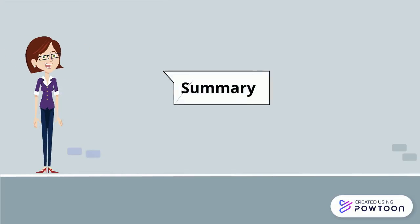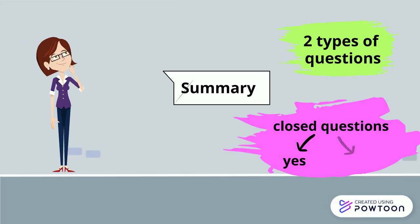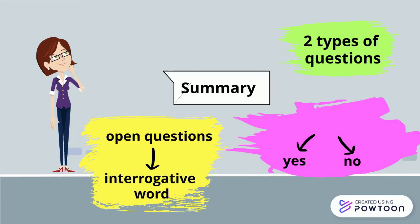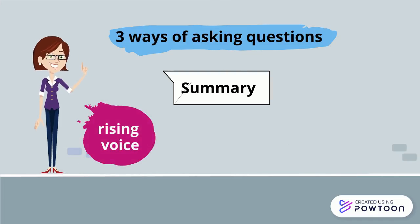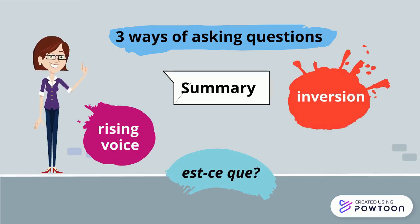To summarise: in French, you add a question mark at the end of a question and generally you raise your voice when speaking. There are two types of questions — closed questions (the answer is yes or no) and open questions (which use an interrogative word). And in French there are three ways of asking questions: the least formal is the rising voice, then the question with est-ce que, and finally the most formal way is the inversion of the subject and the verb. Au revoir!